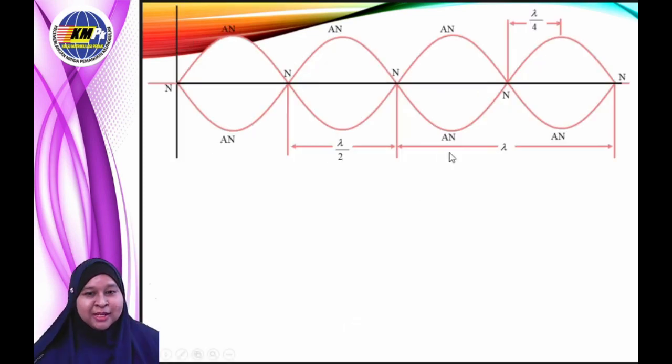Let's look at the next slide. This graph shows the formation of the stationary wave. What you can observe here are points of zero displacement, which we call nodes, and points of maximum displacement, which we call antinodes.